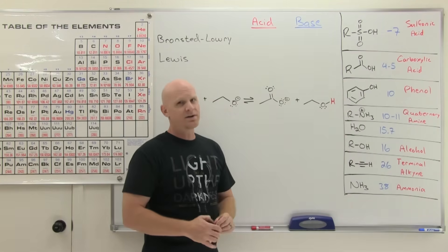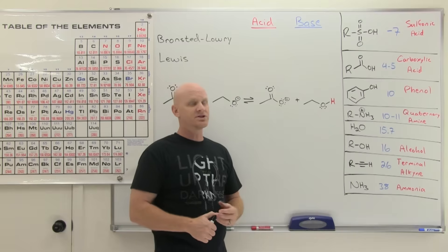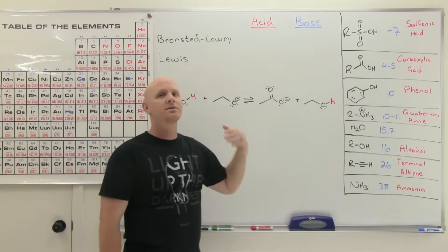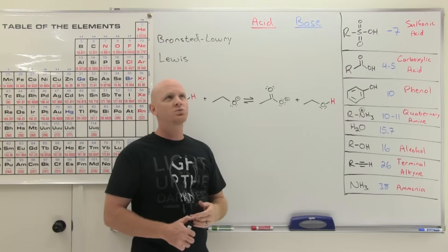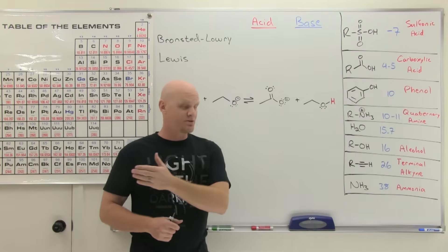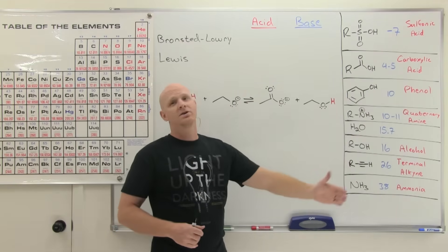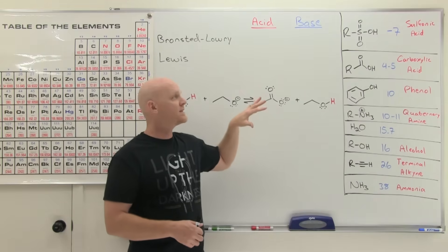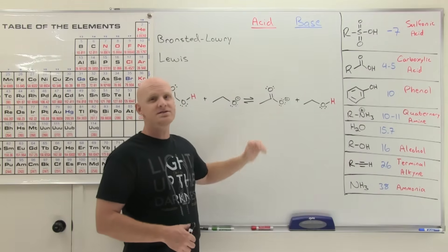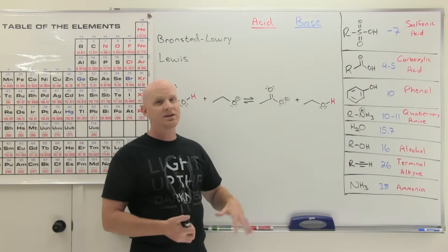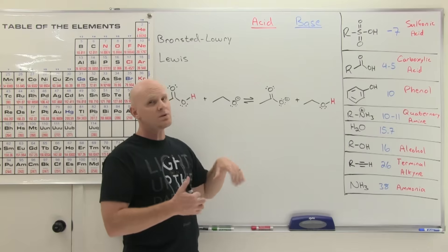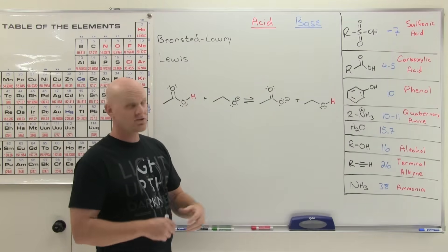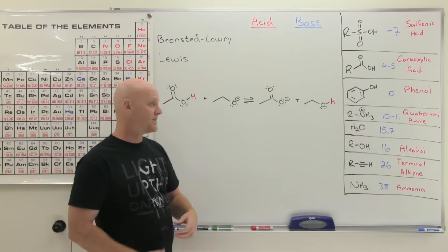Don't worry about the Arrhenius definition you learned in Gen Chem, but the Bronsted-Lowry and Lewis definitions are going to play a pivotal role in understanding organic chemistry throughout your two semesters. This is a super important chapter — it really gives you a basis for understanding chemical reactivity, so you really want to pay particular attention and get this whole chapter down.